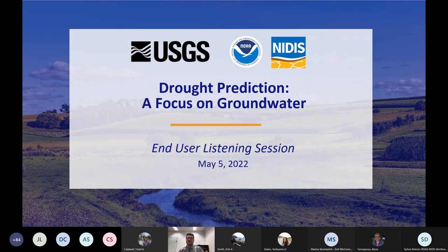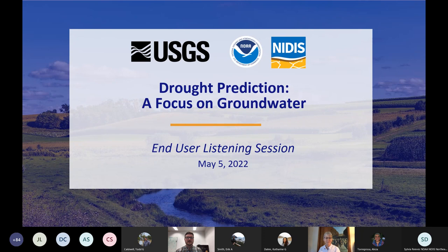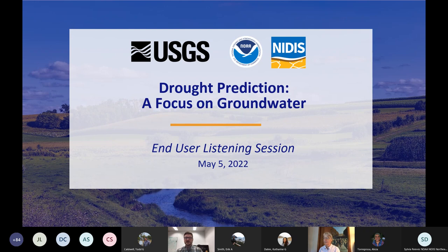Welcome to the second in a series of water availability listening sessions. This is co-hosted by US Geological Survey and NOAA's National Integrated Drought Information System, or NIDIS. These listening sessions seek input on priorities and needs related to predicting water availability changes under drought conditions at both national and regional scales. This input will be used to guide the USGS drought program planning and will also support complementary activities in drought and water availability by other agencies.